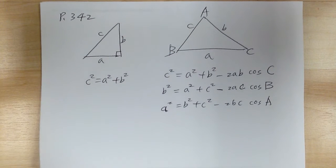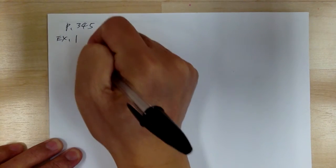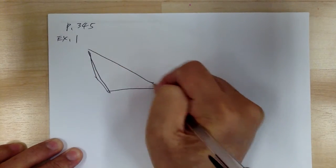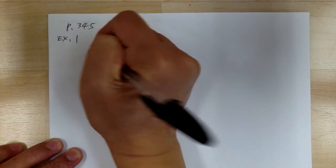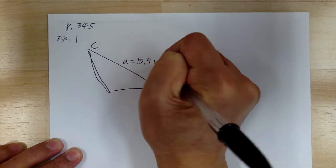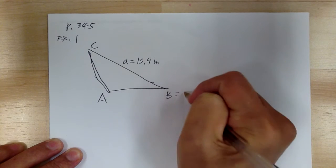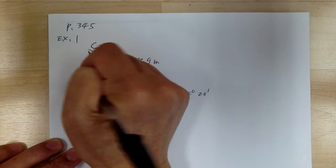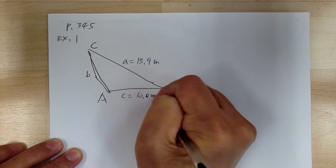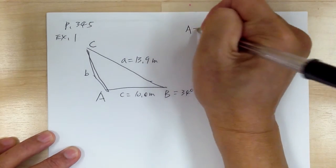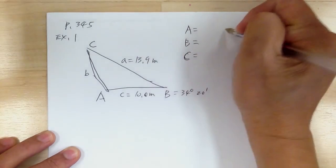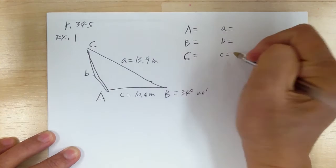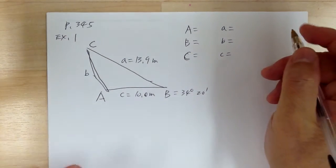So if you use a pattern, formulas are very easy to memorize. Okay, now let's go over an example to see how to use the formula. Let's go to page 345, example one. So you have this triangle. This is angle C, this is A equal to 13.9, angle B equal to 34 degrees 20 minutes, and small C equal to 10.0 meters. Whenever you're solving for a triangle, go ahead and get your A, B, C together to keep everything in order so you don't get confused.